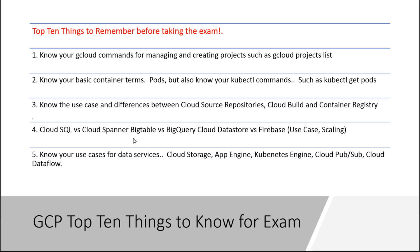Number three: know the difference between Cloud Source Repositories, Cloud Build, and Container Registry. Cloud Source Repositories — if you're going to manage your source code and keep it secure, it's a solid solution. Cloud Build is a great tool for deploying pipelines, for example CI/CD pipelines. And then Container Registry — some people will confuse repositories versus a registry. A lot of it comes down to understanding that Container Registry is meant for your Docker container images — it's meant to store and manage them.